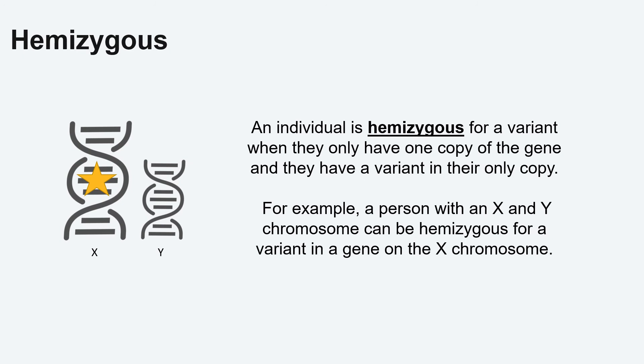Hemizygous means a person has a variant on their only copy of a gene. For example, a person with an X and Y chromosome only has one copy of the genes on the X chromosome. If they have a variant in that gene, they are called hemizygous.